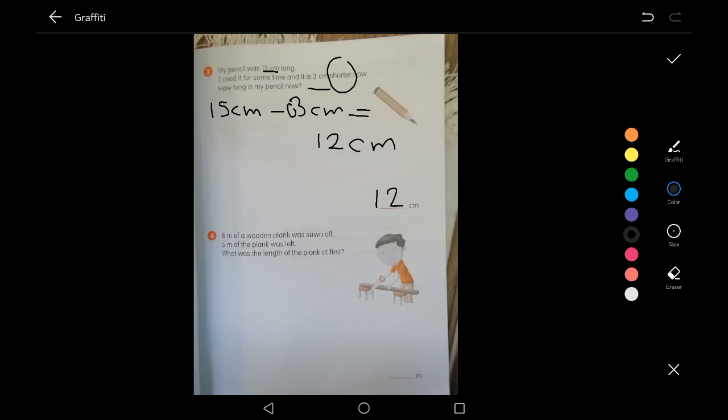So here the keyword was shorter. That's why we subtracted. We made sure that both units are the same, cm, cm, so we could subtract here.